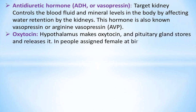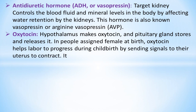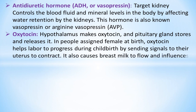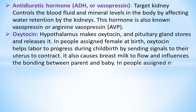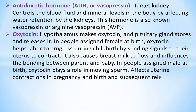In people assigned female at birth, oxytocin helps labor to progress during childbirth by sending signals to the uterus to contract. It also causes breast milk to flow and influences the bonding between parent and baby. In people assigned male at birth, oxytocin plays a role in moving sperm and affects uterine contractions in pregnancy and birth and subsequent release of breast milk.